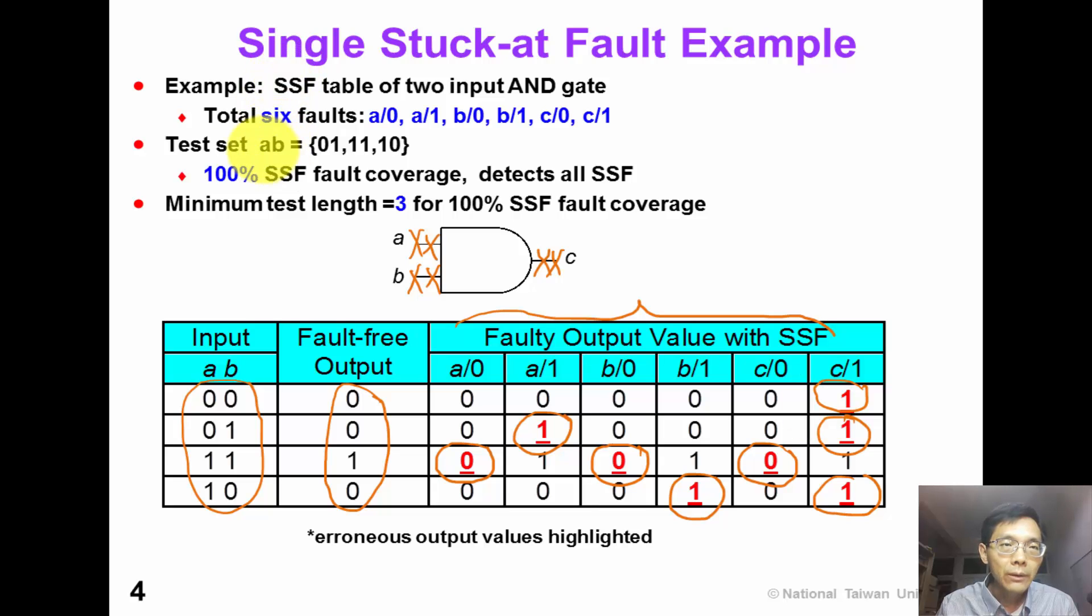We can see that all 6 faults can be detected by at least one test pattern. If we have a test set of 3 test patterns, 0-1, 1-1, and 1-0, which are row 2, 3, and 4, then we can detect all the 6 faults. So we have 100% single stuck-at fault coverage. We can also see that the minimum test length is 3 to achieve 100% single stuck-at fault coverage.